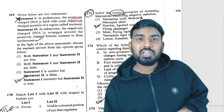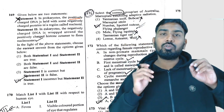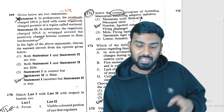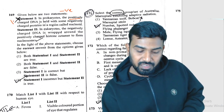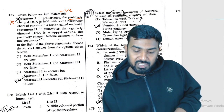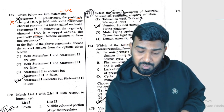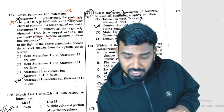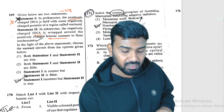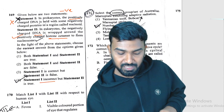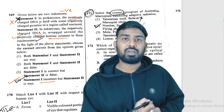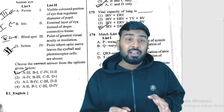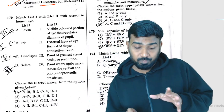Question 169: statement one says prokaryotic DNA is positively charged — wrong. Whether prokaryote or eukaryote, DNA is always negatively charged. Statement two says eukaryotes have negatively charged DNA wrapped around positively charged histone octamer — correct. So statement one is incorrect and statement two is correct.